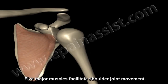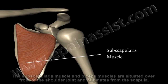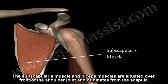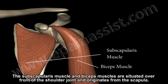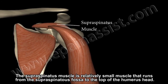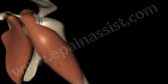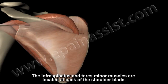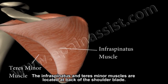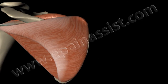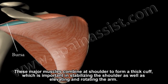Five major muscles facilitate shoulder joint movement. The subscapularis muscle and bicep muscle are situated over the front of the shoulder joint and originate from the scapula. The supraspinatus muscle is a relatively small muscle that runs from the supraspinatus fossa to the top of the humerus head. The infraspinatus and teres minor muscles are located at the back of the shoulder joint. These major muscles combine at the shoulder to form a thick cuff, which is important for stabilizing the shoulder joint as well as elevating and rotating the arm.